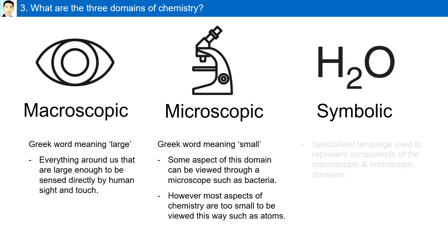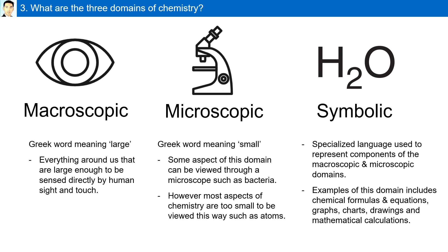The symbolic domain is a specialized language used to represent components of the macroscopic and microscopic domains. Examples of this domain include chemical formulas such as H2O — shown above is the formula for water — and equations, charts, graphs, diagrams, and mathematical calculations.